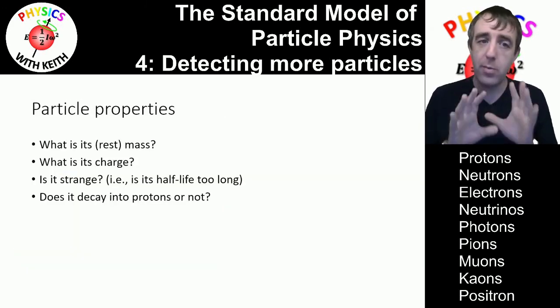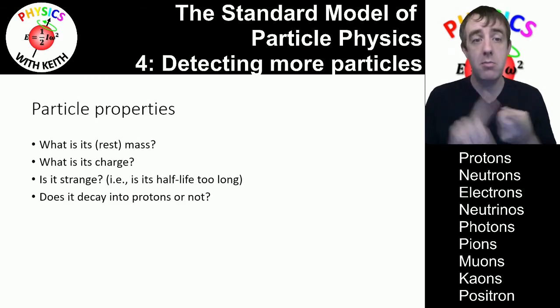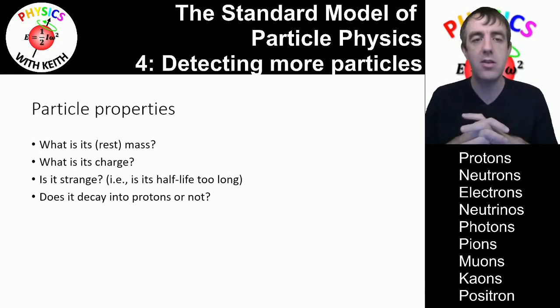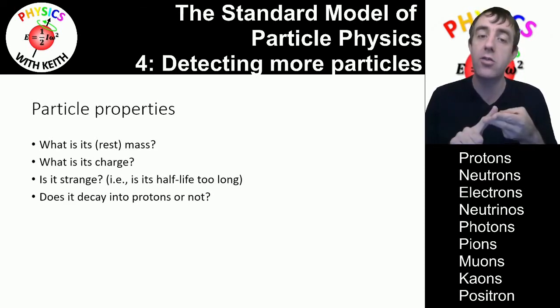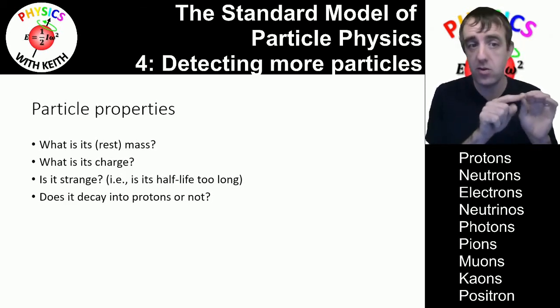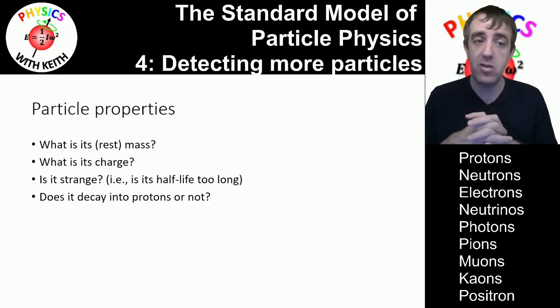Now the particle properties that you can determine by looking at them in these detectors are the mass. You can determine the mass partly by the energy of the collision and how many particles are emitted but also through this process of calorimetry. You can determine the charge by having strong magnetic fields causing the charged particles to be deflected and by measuring that deflection we can determine the charge.